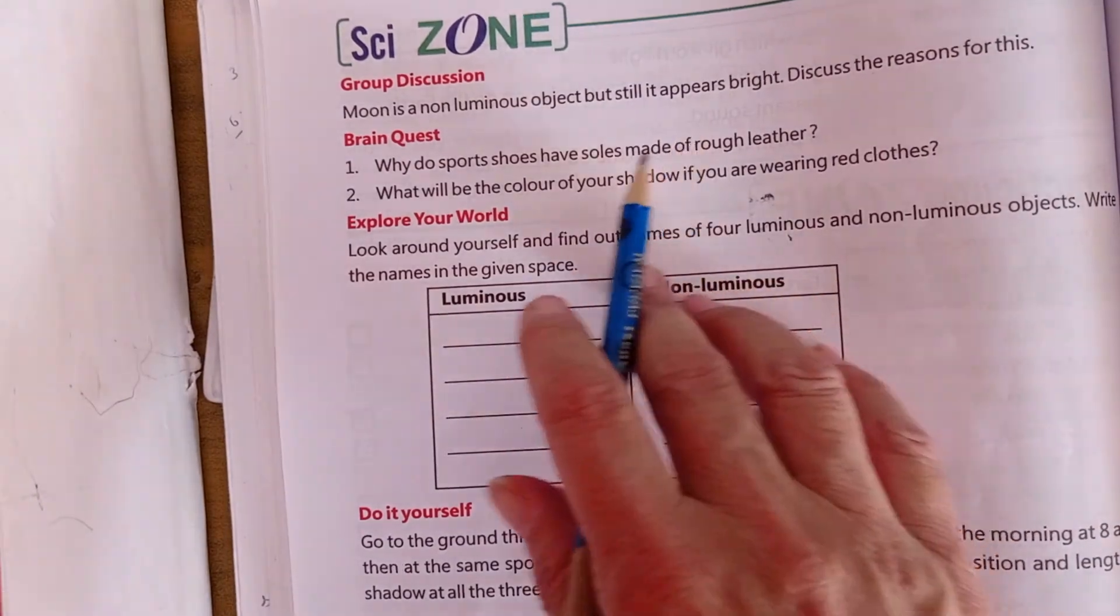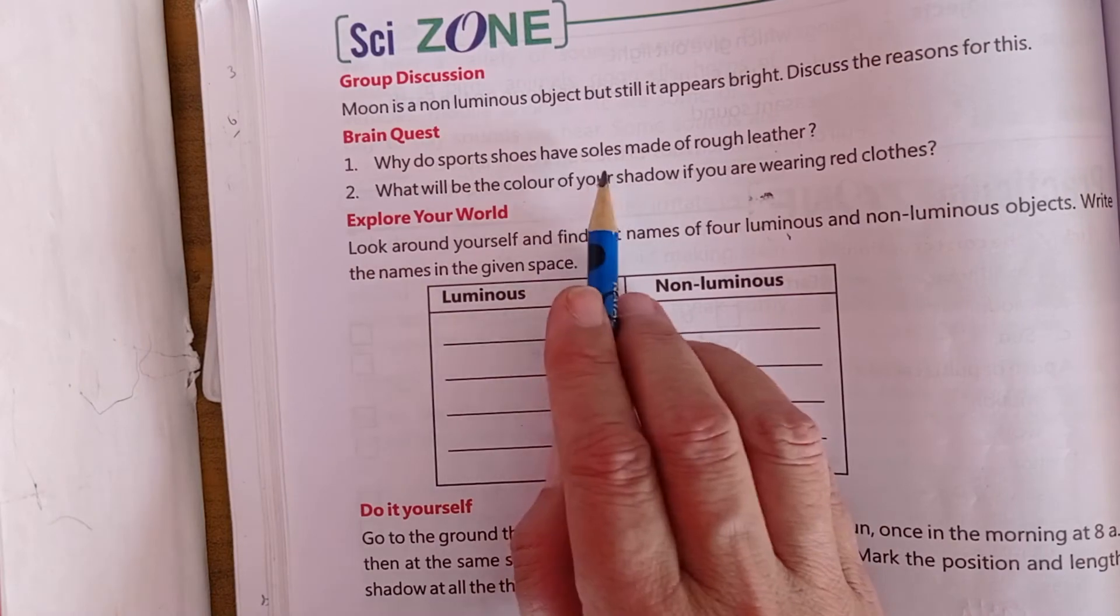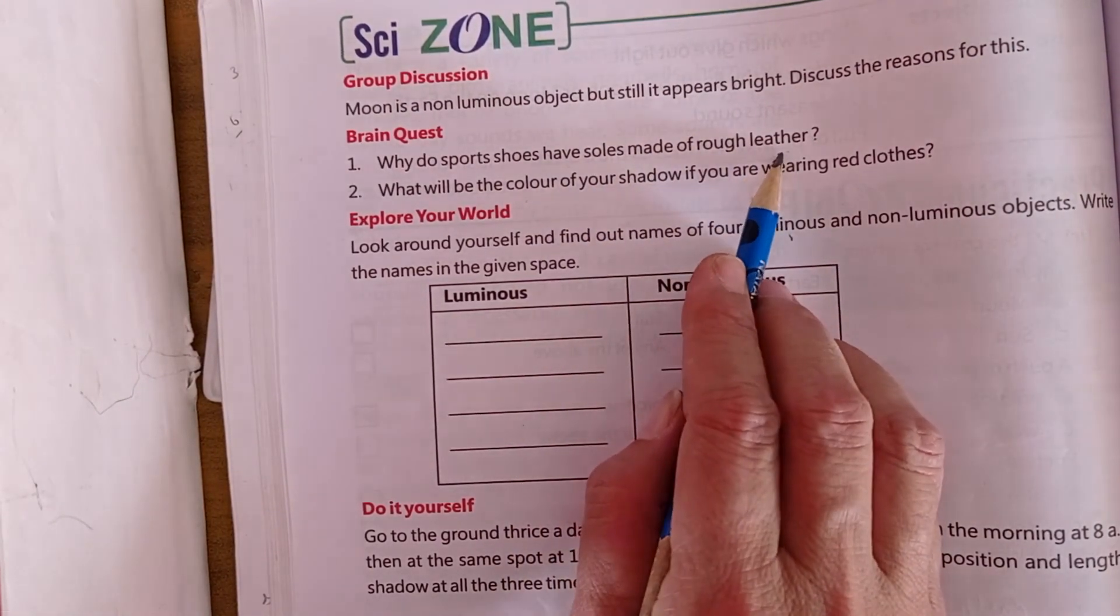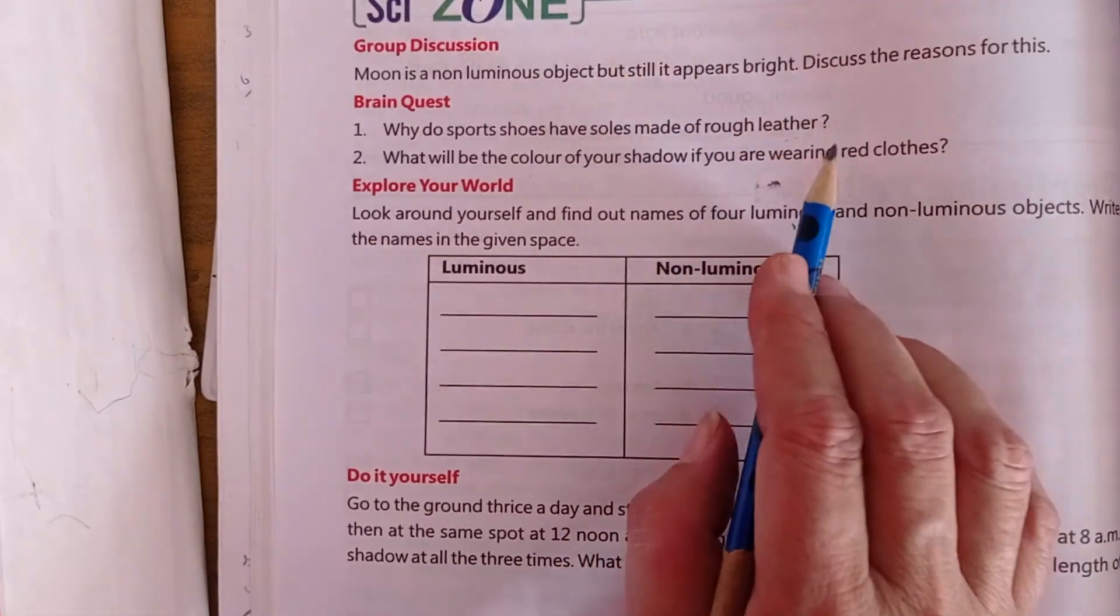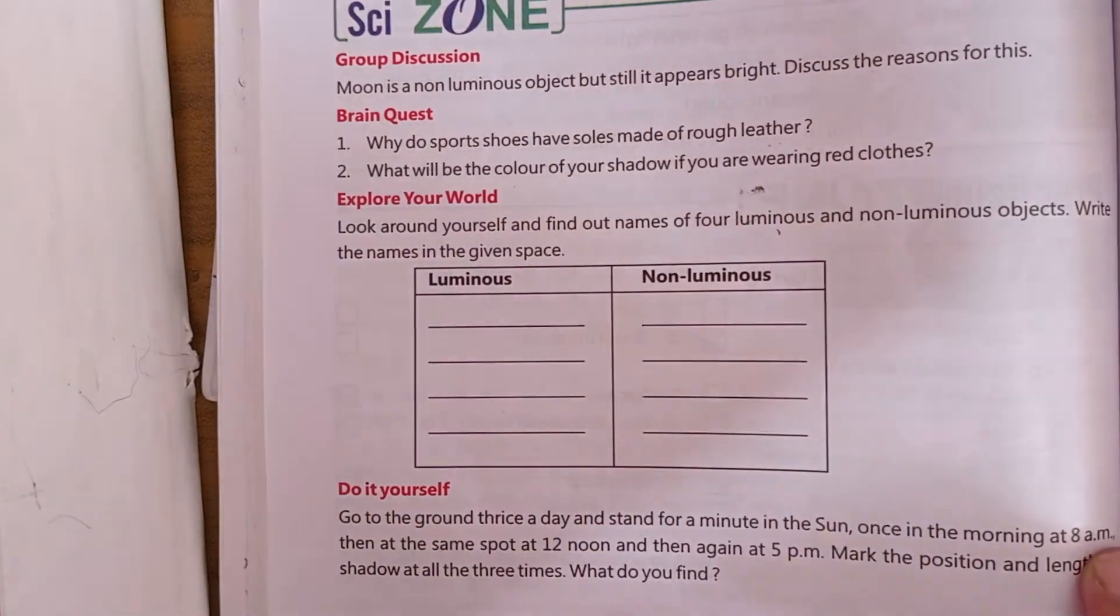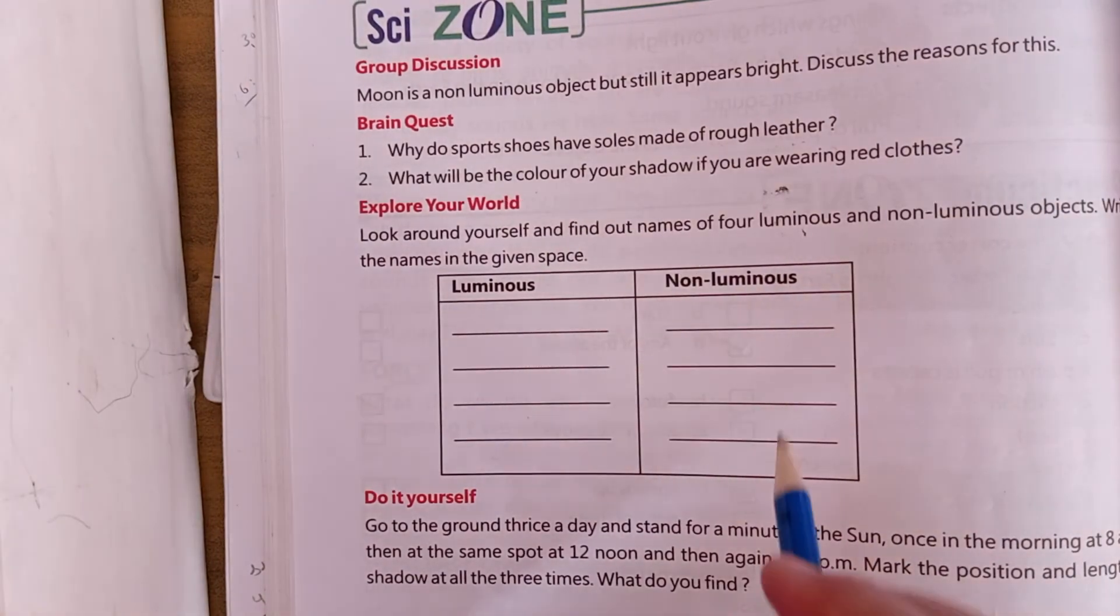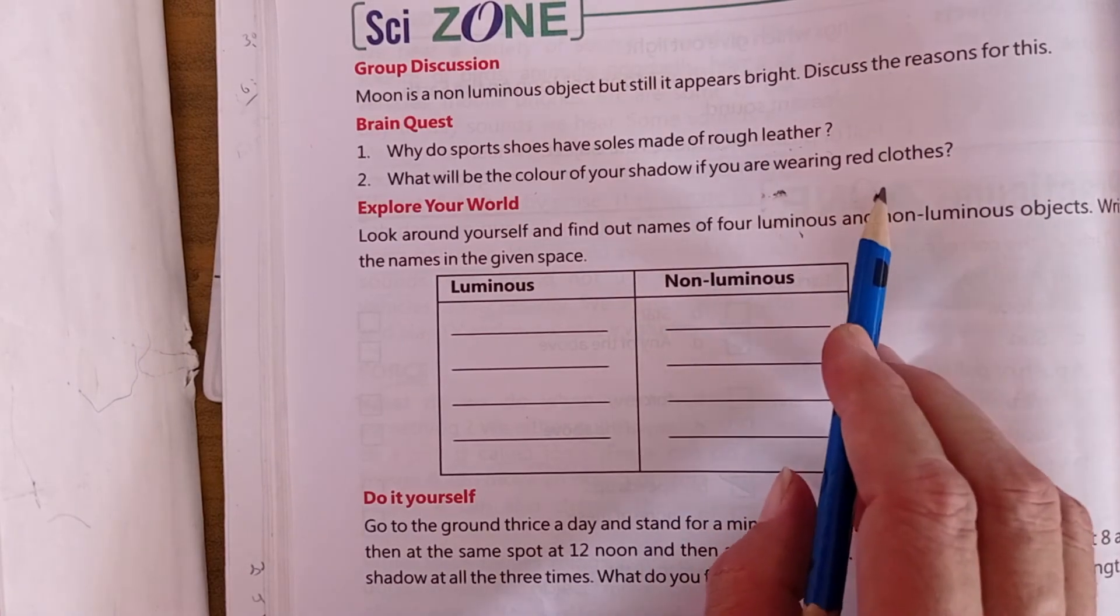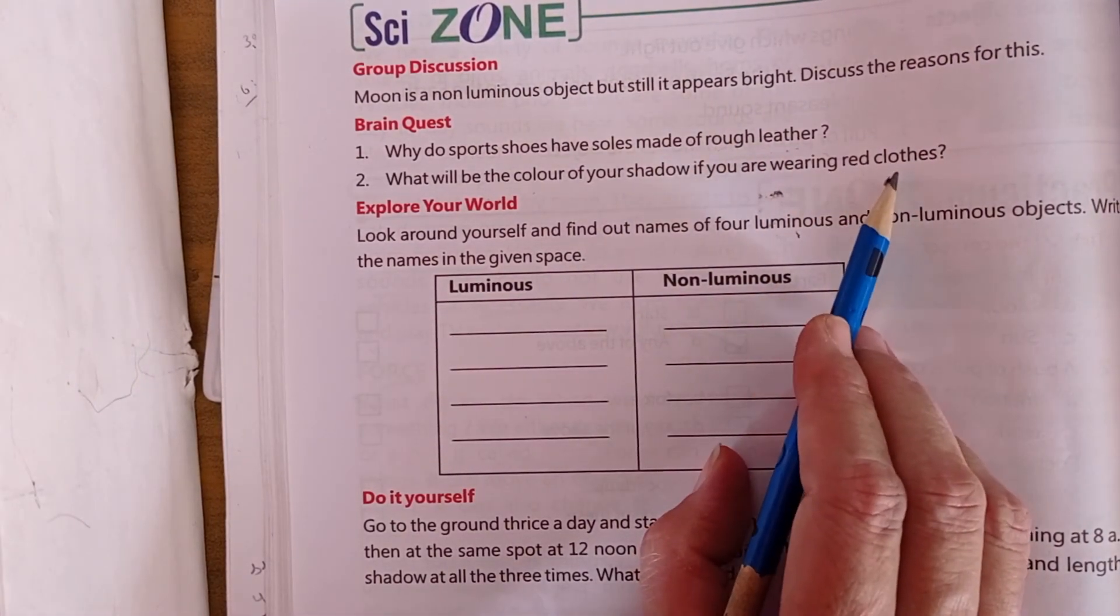Why do sports shoes have soles made of rough leather? The sports shoes are made of rough leather so that friction can be created. If it is not rough, then we will slip. The sole is made of rough leather so that friction can slow movement during sports. What will be the color of your shadow if you are wearing red clothes? Our shadow will always be black.